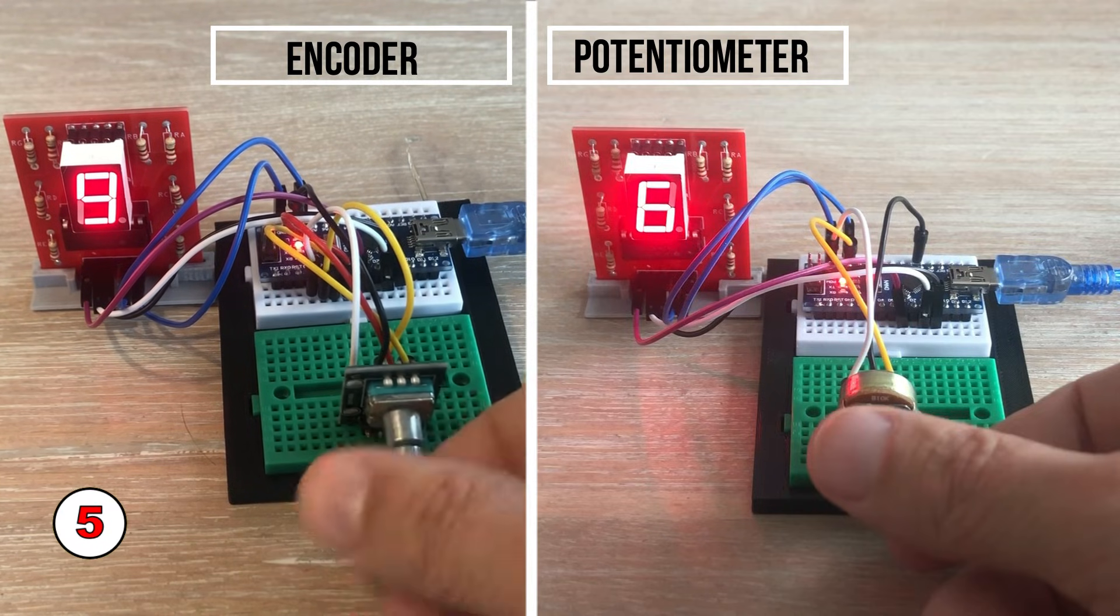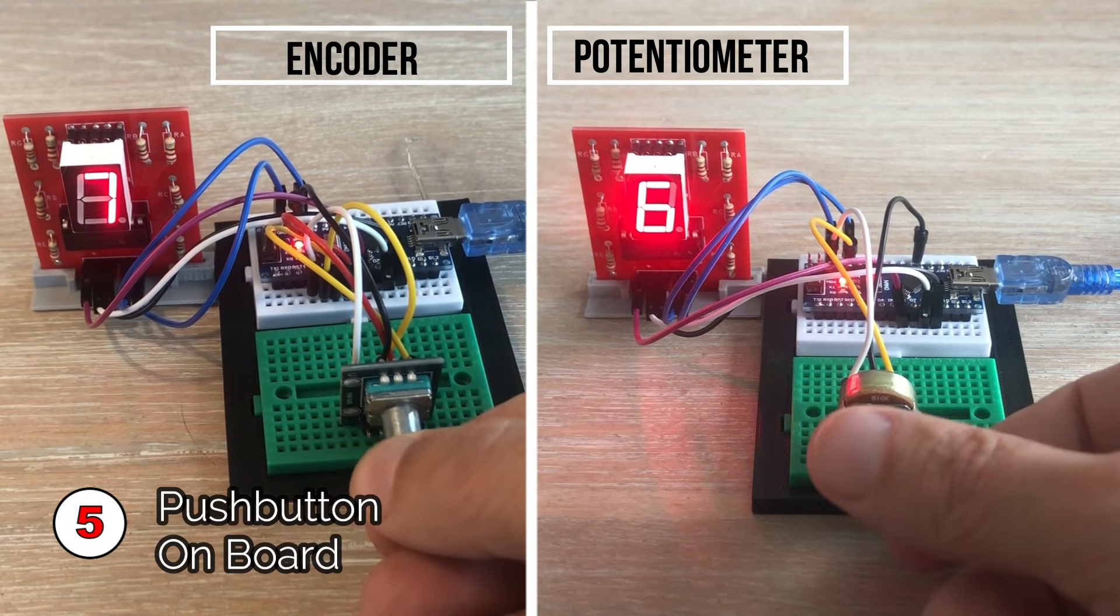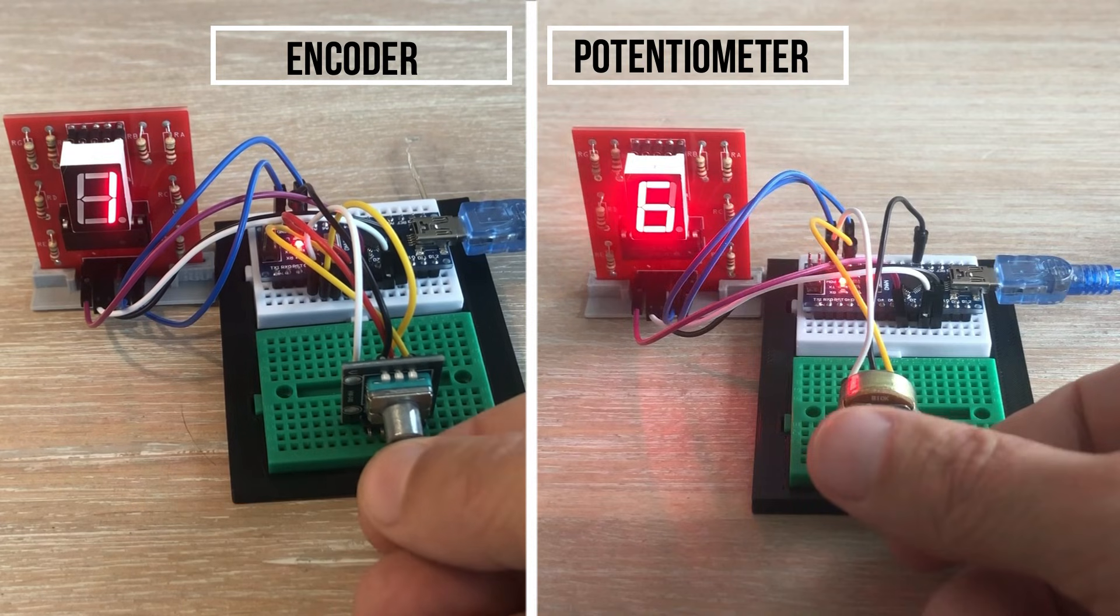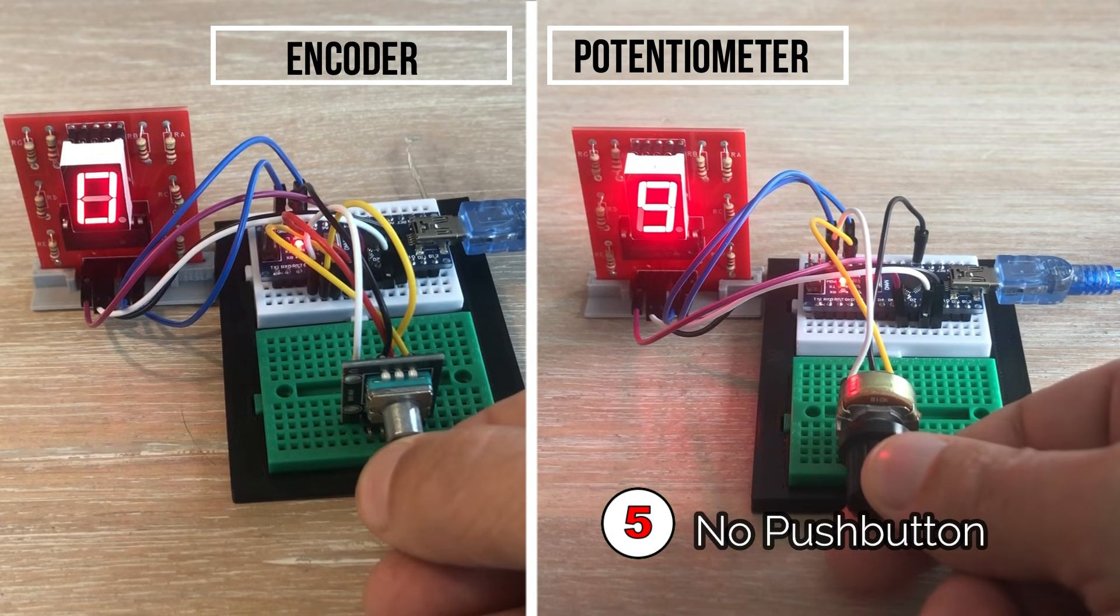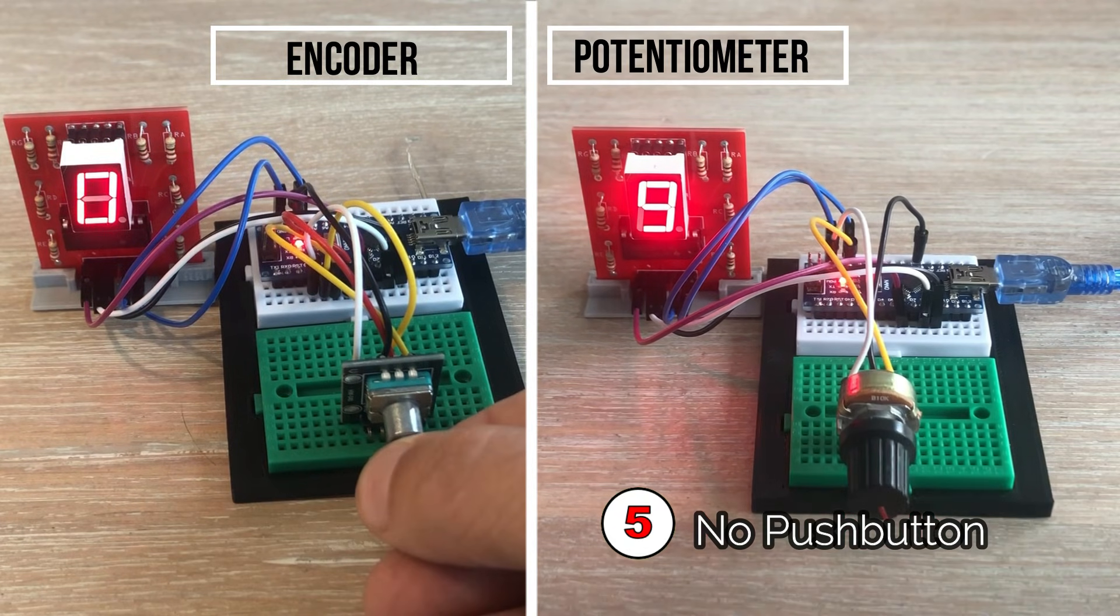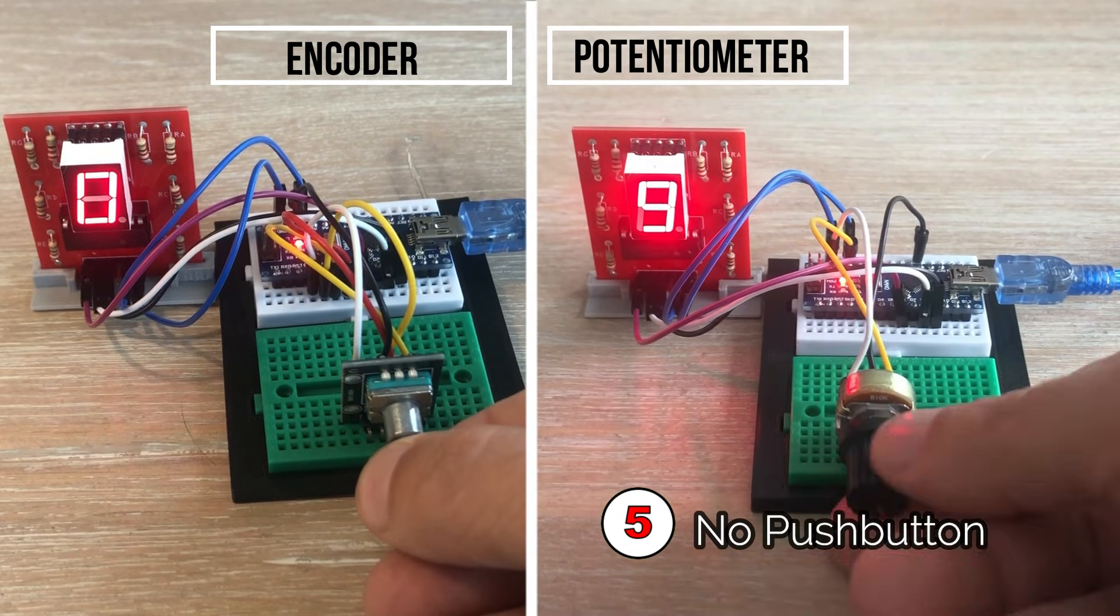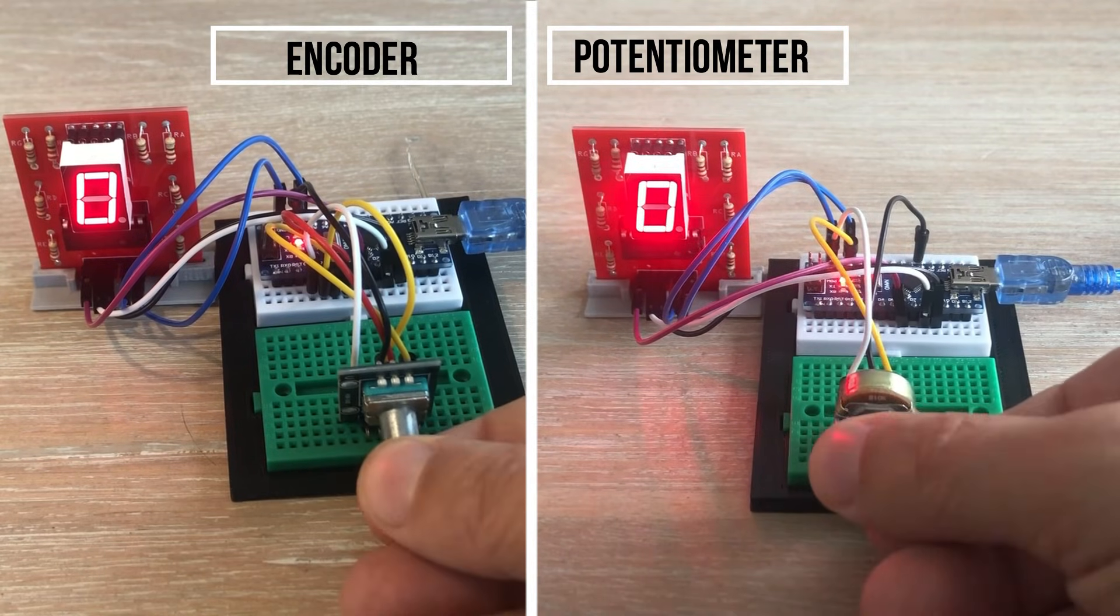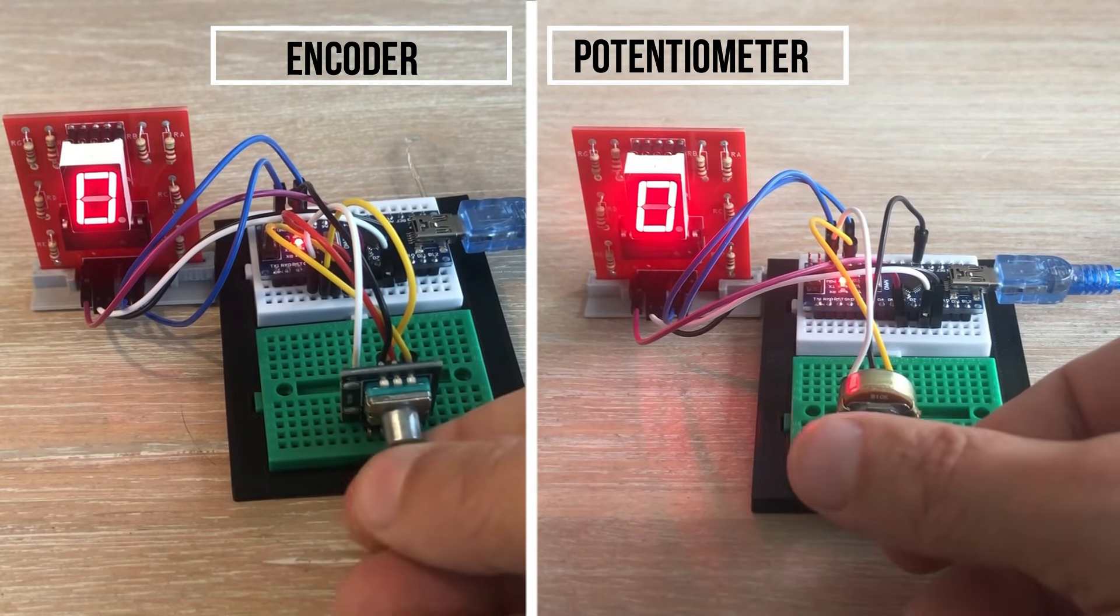And finally the encoder has push button functionality which can prove very useful at times and potentiometer does not. So if you need that functionality you need additional components in your project. So there are five main differences. Have I missed anything? And that brings us to the end of this video.